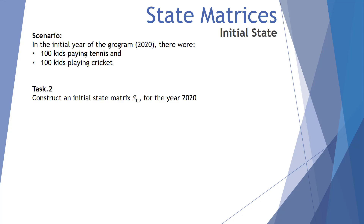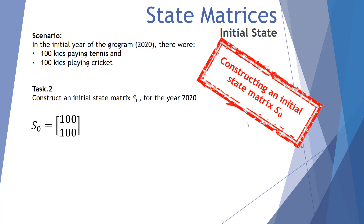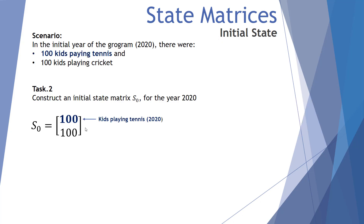Our scenario: in the initial year of the program, 2020, there are 100 kids playing tennis and 100 kids playing cricket. Task two: construct an initial state matrix S₀ for the year 2020. S₀ is a column matrix with 100 on top and 100 on the bottom — the top represents the 100 kids playing tennis in 2020, and the bottom represents the 100 kids playing cricket in 2020.